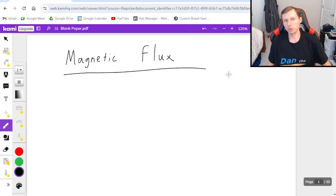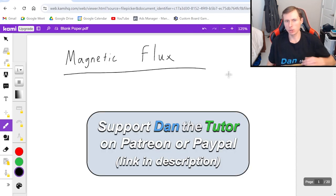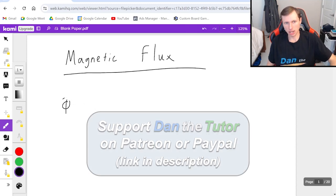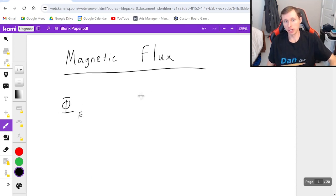This is very similar to electric flux. As a matter of fact, the equation is almost identical. If you remember, the equation for electric flux was E, the electric field, times A area times cosine theta. For magnetic flux, the only difference is that we use B, the magnetic field, instead of E, but the rest is the same.